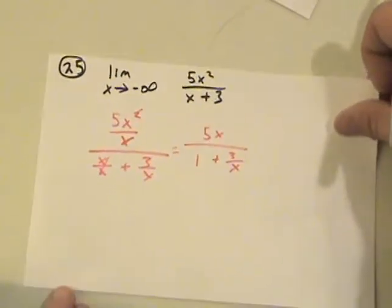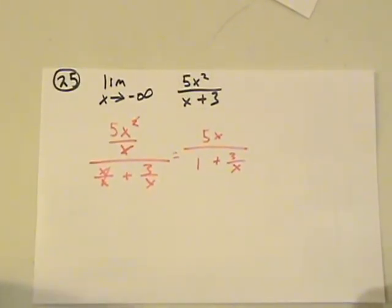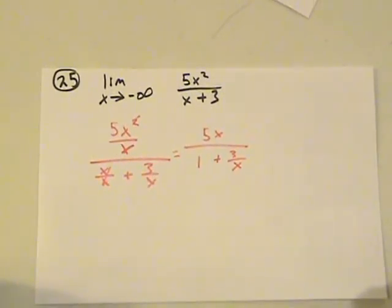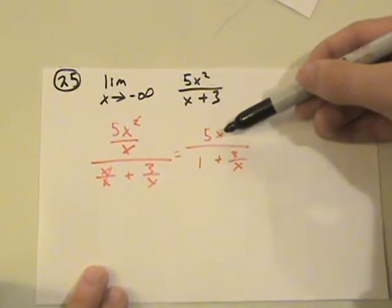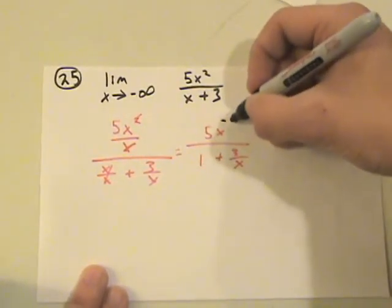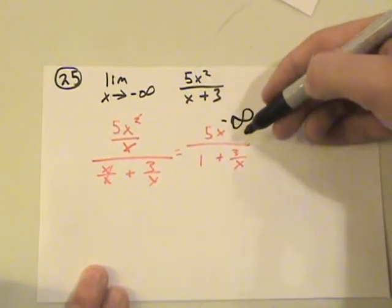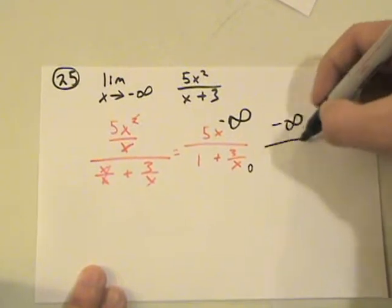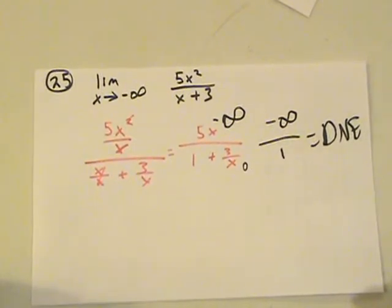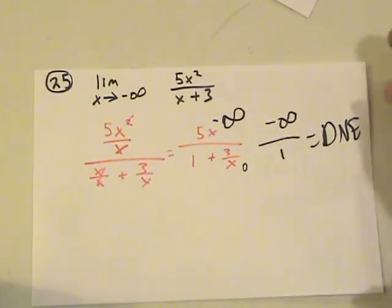For number 25, we multiply by the highest power of x in the denominator and end up getting 5x over 1 plus 3 over x. In this case it's not a constant over x — it is 5 times x. So right away we can tell the top is going to negative infinity. The bottom doesn't really matter; it's just negative infinity over a finite number. So the limit is just going to infinity — it keeps going on and on — and there's no limit. I hope that helped.